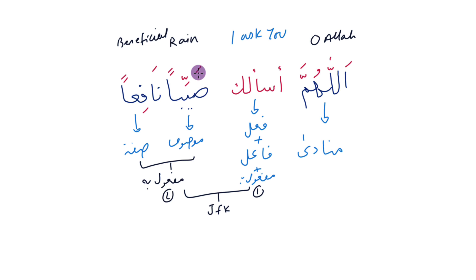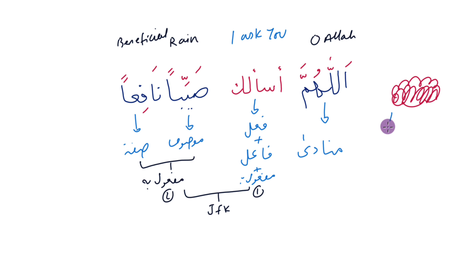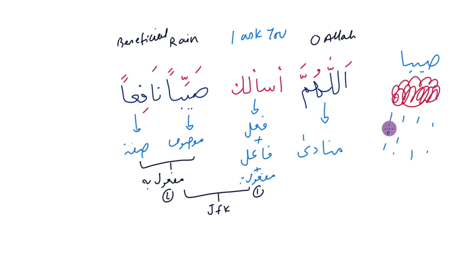صيب means a heavy rain-laden cloud. This rain can be beneficial — it can make things grow, give us water to drink — or it can be harmful, like the rain of the time of Nuh (Noah) which destroyed everything and all the people. All of this is in the hands of Allah subhanahu wa ta'ala.